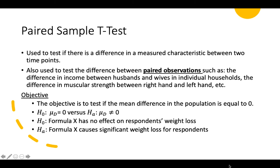Take a careful look at the objective of the test. It's to test the mean differences in the population if it's equal to zero. You can see the hypothesis here. The null hypothesis would be: formula X or diet pill X has no effect on respondents' weight loss. The alternative: formula X causes significant weight loss for respondents. As you can see, there's a lot of variation in how you write the hypothesis.